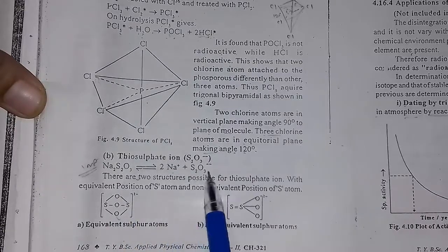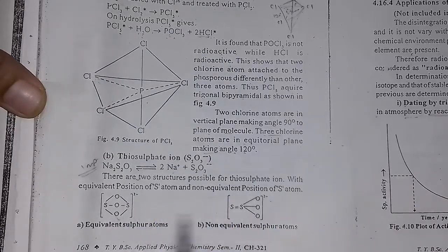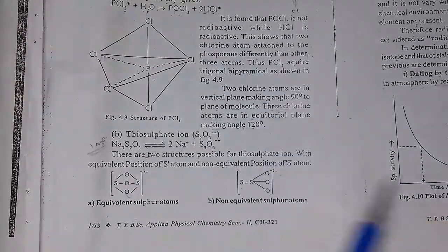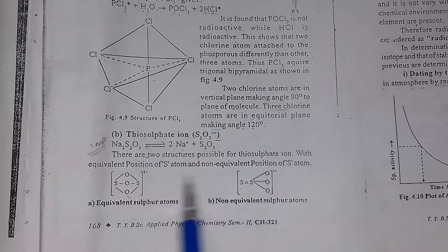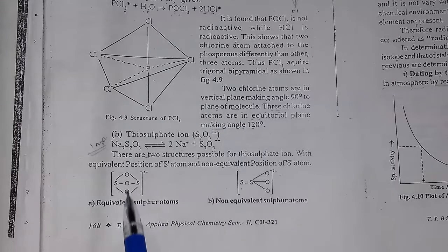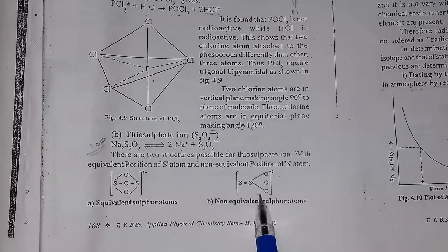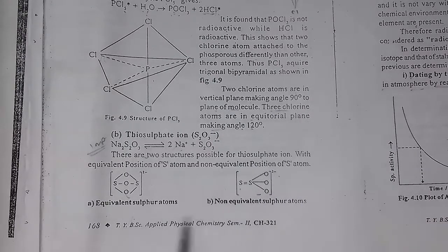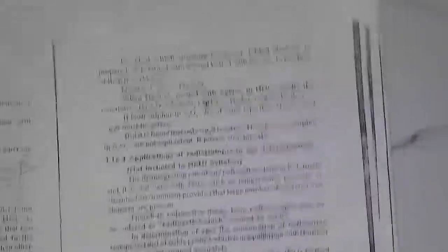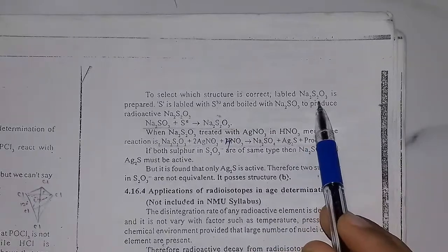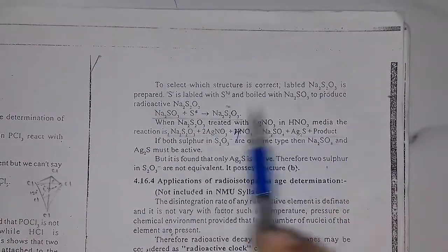If you want to take an example, there are two possible structures. You can easily find that one has equivalent positions and the other has non-equivalent positions. This is the equivalent structure and this is the non-equivalent structure. Then you can tell which is the correct structure based on the isotope labeling experiment.